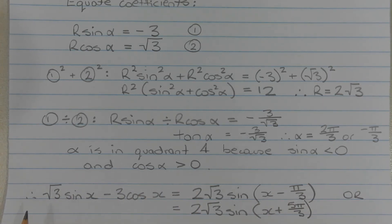Therefore, root 3 sine x minus 3 cos x is equal to 2 root 3 sine of x minus pi over 3 or 2 root 3 sine of x plus 5 pi over 3.